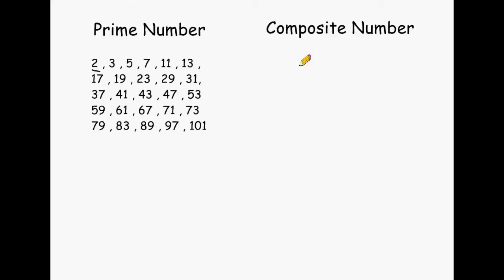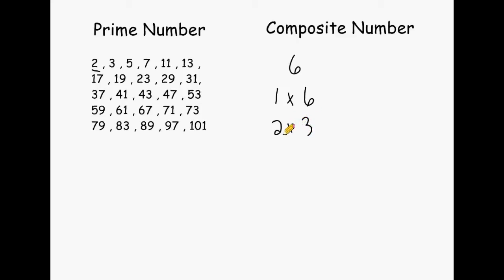A composite number is simply a number that is created by making multiples of prime numbers. For example, 6 is a composite number because not only can you multiply 1 times itself to produce 6, you can also multiply 2 times 3 to produce 6. Notice that 2 is a prime number and 3 is a prime number. So with composite numbers, you have a combination of ways that you can produce that number — not only 1 times itself, but also another number times another number.